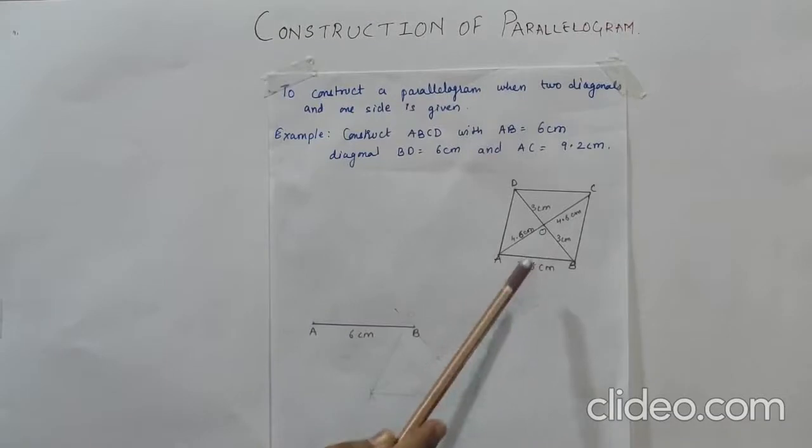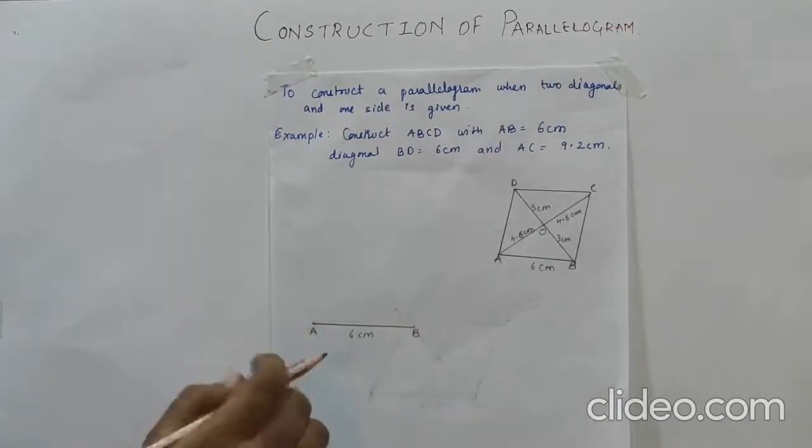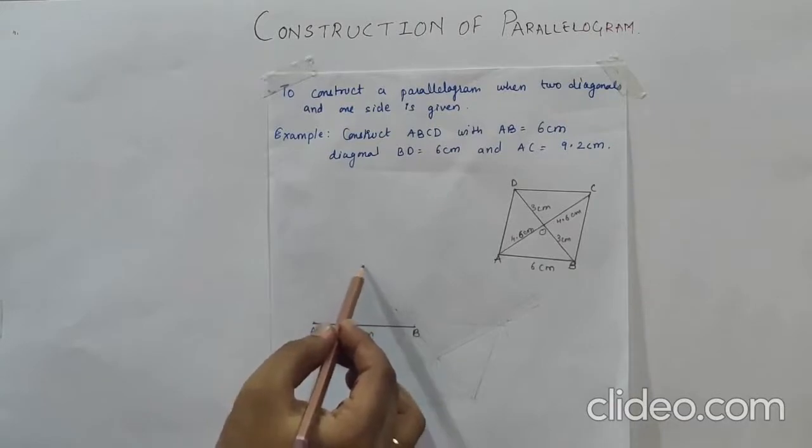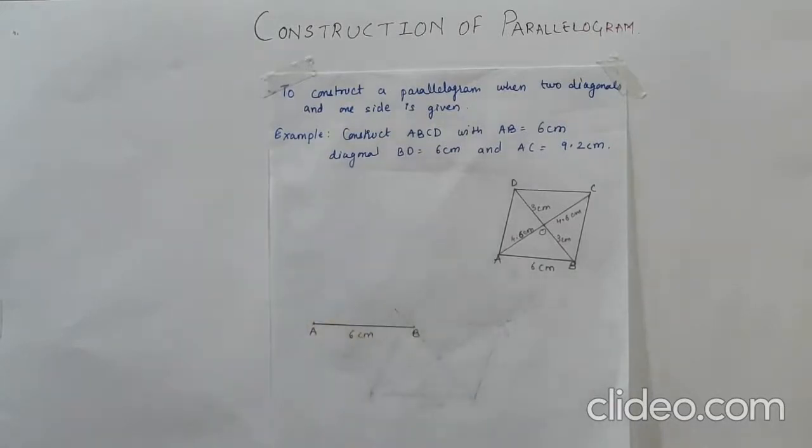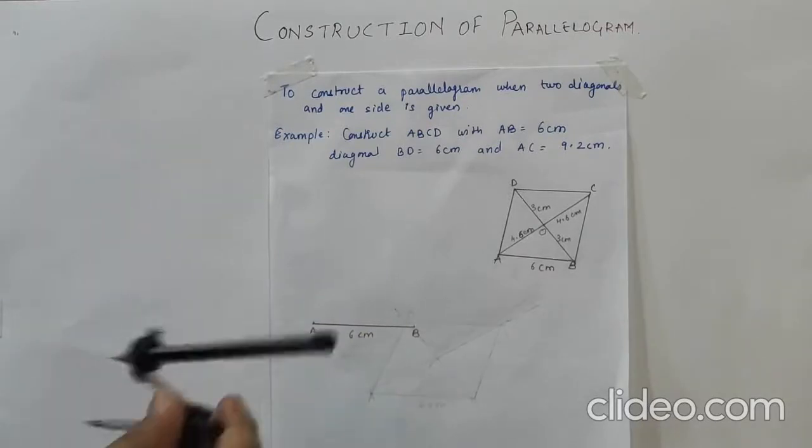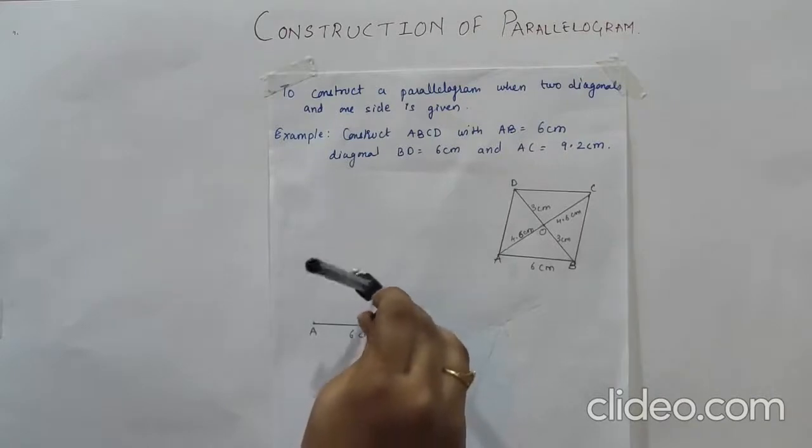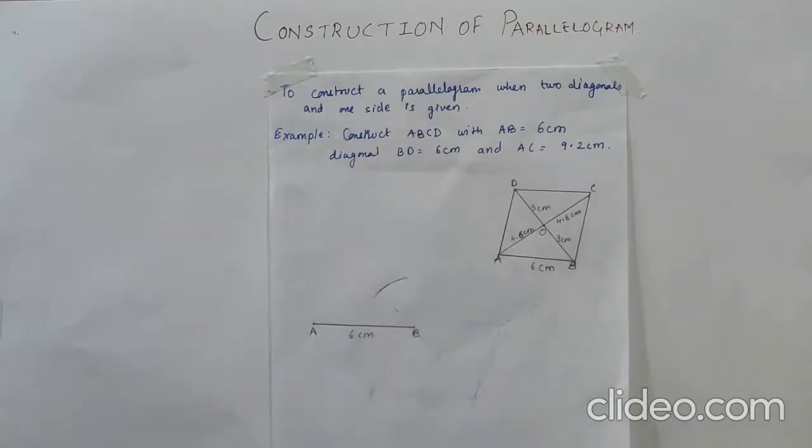What we are going to do over here is first we will construct this triangle AOB. So we have already constructed AB is 6 cm. We will be constructing 4.6 cm and we will cut the arc of 3 cm to make the triangle AOB. So this I have taken the measurement 3 cm. I will keep it over here and cut the arc.